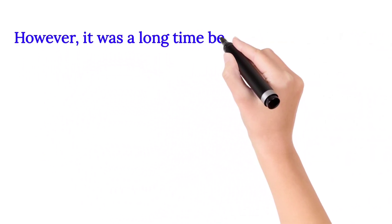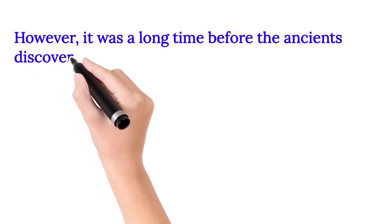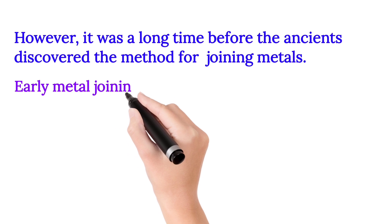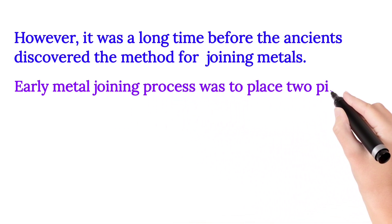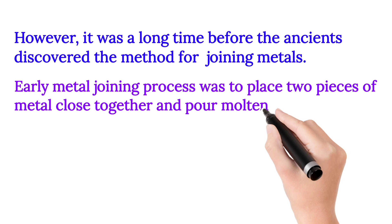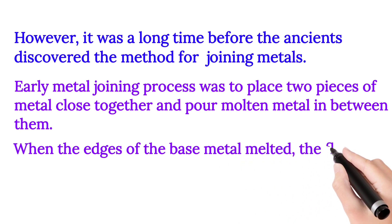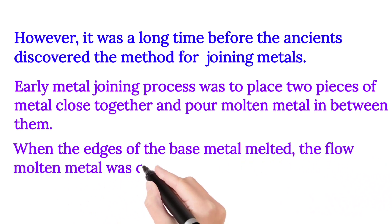However, it was a long time before the ancients discovered the method for joining metals. Early metal joining process was to place two pieces of metal close together and pour molten metal in between them. When the edges of the base metal melted, the flow of molten metal was dammed by sand. Now, let us see through two dimensional diagrams how in ancient times or early stage the welding process was started.